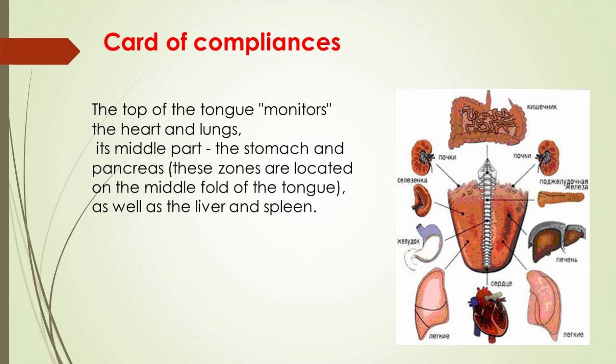In the context of tongue diagnostics, the top of the tongue reflects the heart and lungs; the middle part reflects the stomach and pancreas; the middle fold also reflects the liver and spleen. By the root of the tongue, it is possible to judge the state of the intestines, and by the lateral sections, the kidneys. The middle fold of the tongue reflects the condition of the spine.